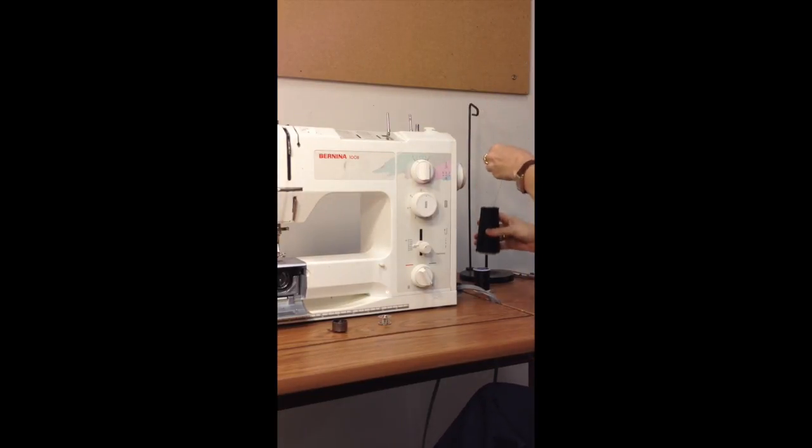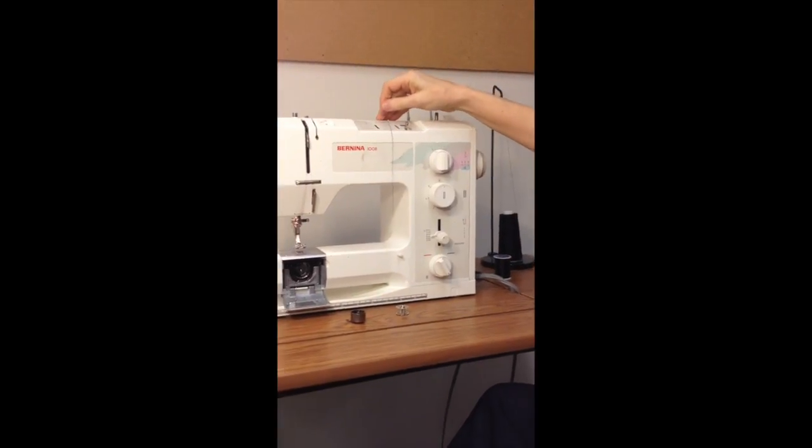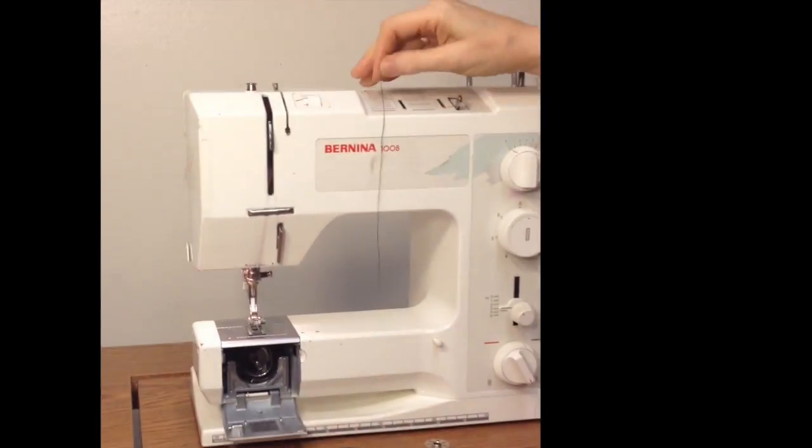So we put this thread cone over here and the thread feeds straight up into this guide and then over to the machine this way. Now to wind a bobbin,